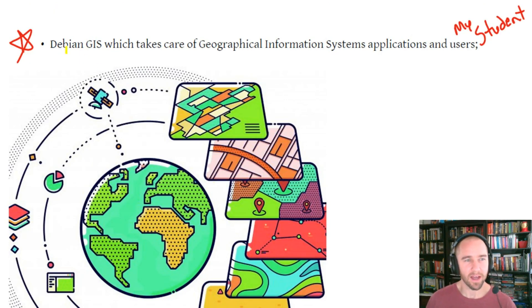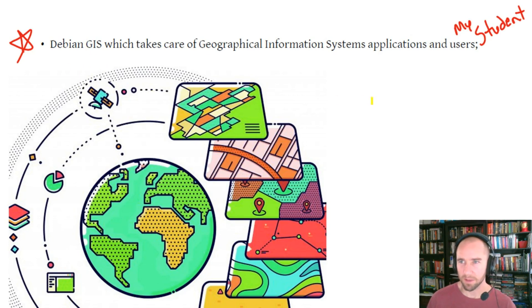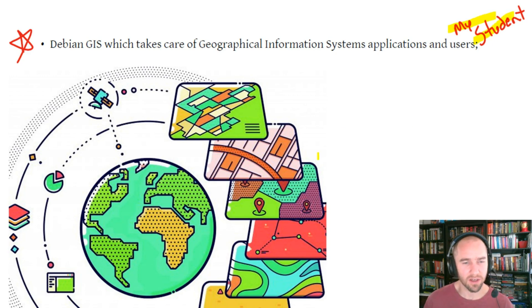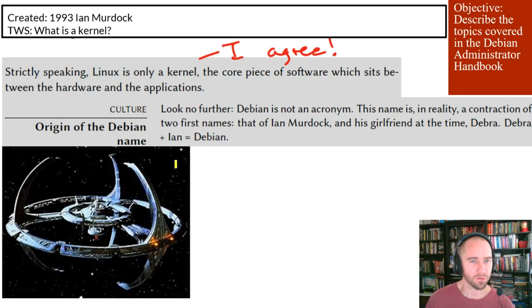Here we are learning that the geographic information system uses Debian. So shout out to my student who is very interested in taking his life in that direction — might want to become familiar with Debian if that's what you want to do.